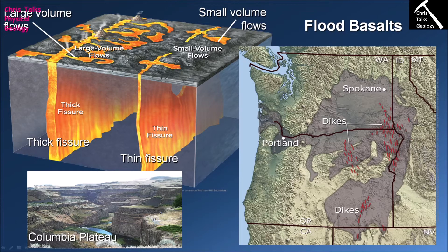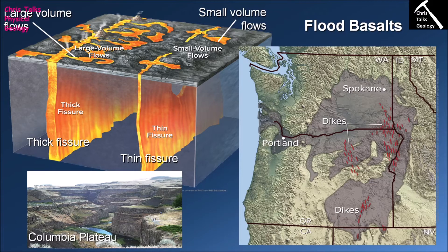The area covered by the Columbia Plateau is absolutely huge. Each of the red lines on this map represents dikes, which indicate the position of fissures through which lava was erupted onto the surface of the earth. You can see numerous fissures through which lava would have been erupted — not all simultaneously, but a large proportion operating at the same time, allowing very large amounts of lava to reach the surface very quickly.